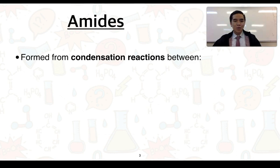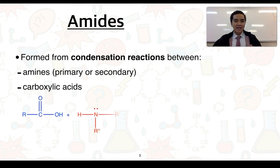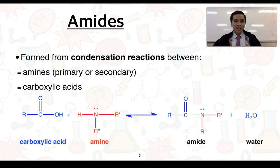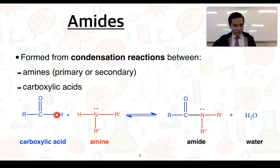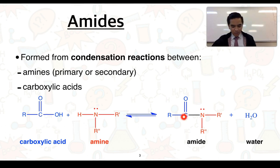Like esters, amides are formed from condensation reactions. However, they form from condensation reactions between amines — this can be primary or secondary — and carboxylic acids. The OH group from the carboxylic acid and a hydrogen from the amine combine to produce water. We end up joining the carbon to the nitrogen. The combination of this carbon-to-oxygen double bond and this carbon-to-nitrogen bond is typically what we refer to as the amide functional group.